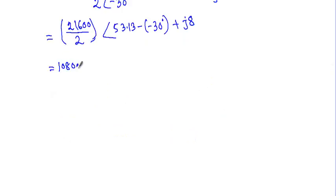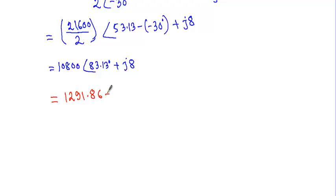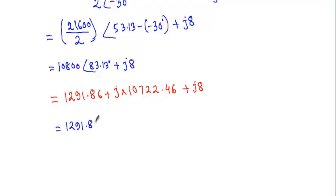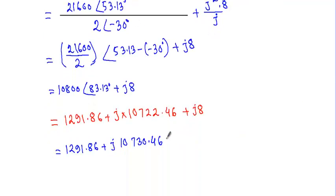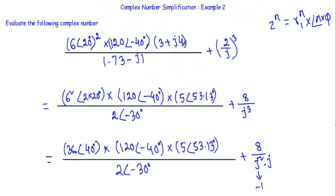After performing the multiplication and division, we get 10800 phase angle 83.13 degrees. Converting this to Cartesian form gives 1291.86 plus j10722.46. Adding the j8 term, the final simplified result is 1291.86 plus j10730.46.